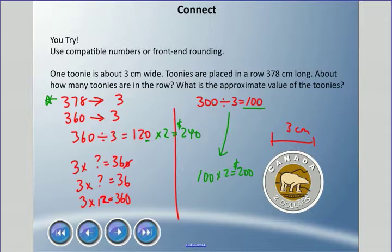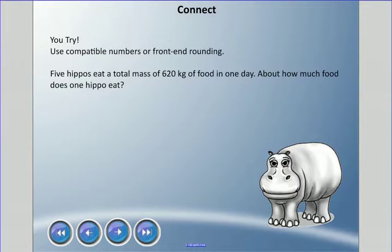So that's a difference of $40. The compatible number worked a little bit better than the front-end rounding. So remember that front-end rounding is always going to be an underestimate. Compatible numbers could be an underestimate or overestimate depending on where you go with it. But compatible numbers here seem to have worked better, though there are times that it will work fine with front-end rounding.